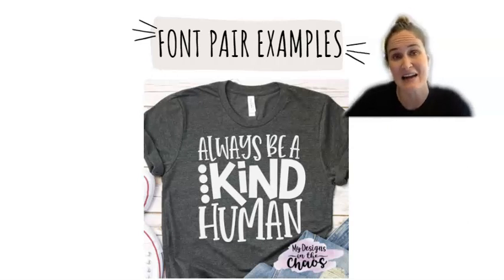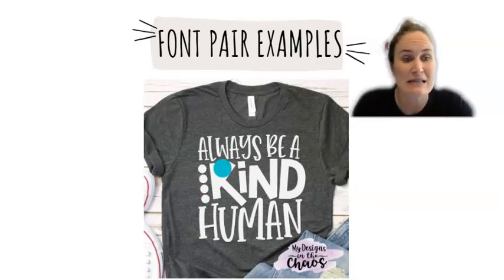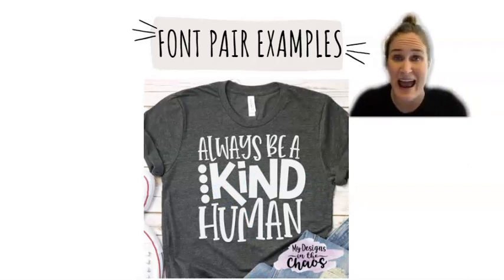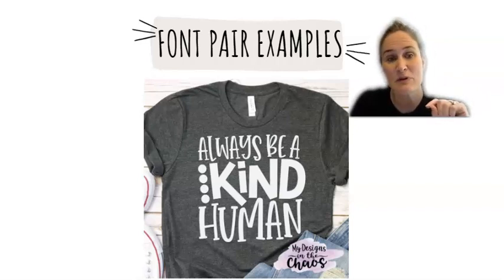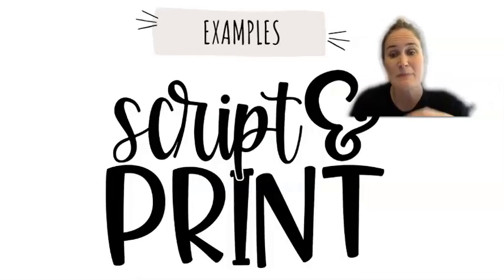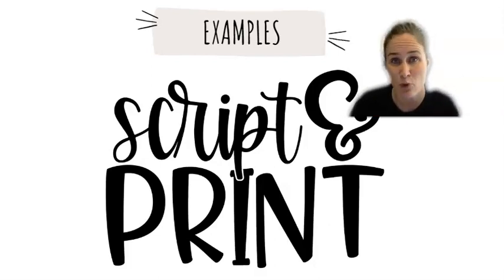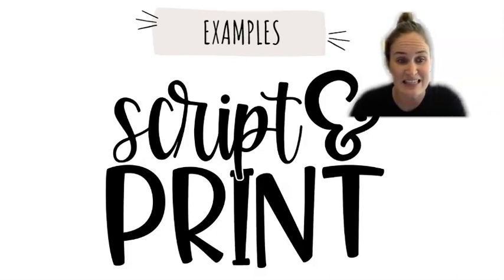This is a design from inside my membership. You can notice across the top and across the bottom I've got that serif font, and then in the middle the sans serif font where there are no lips on any of those letters. So that's font pair example number one: pair a serif font with a sans serif font. Option two — one of my favorites — is when you pair a script font with a print font. That typically goes really well together.